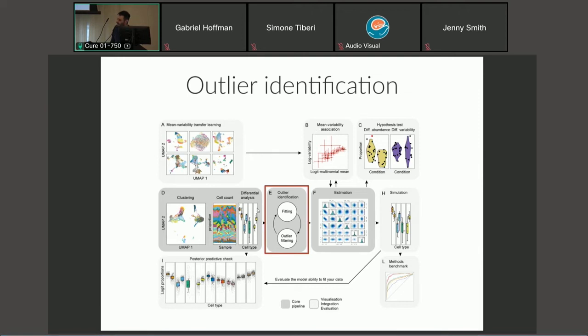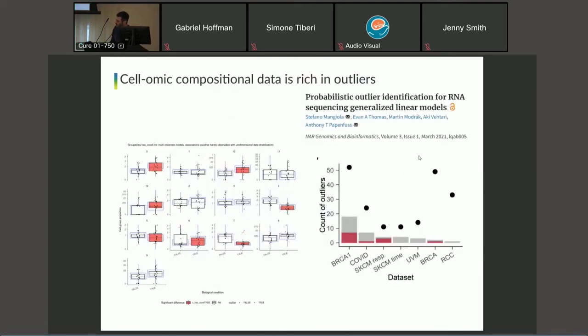Another aspect is outlier identification. We developed a model last year for doing outlier identification for count distributions for RNA sequencing data. This method is transferable to our distribution in this case. This is a representation of a real dataset. We have proportion on the y-axis, faceted by cell types, and each dot is a sample. We have roughly 20 samples here comparing categories. For example, in this cluster 7, we have a decrease in abundance of this cell type, except for some samples. Our method takes the linear model and all the uncertainty and identifies probabilistically these outliers that we can explore further. We can decide to drop them from the estimates and have a more robust estimate.